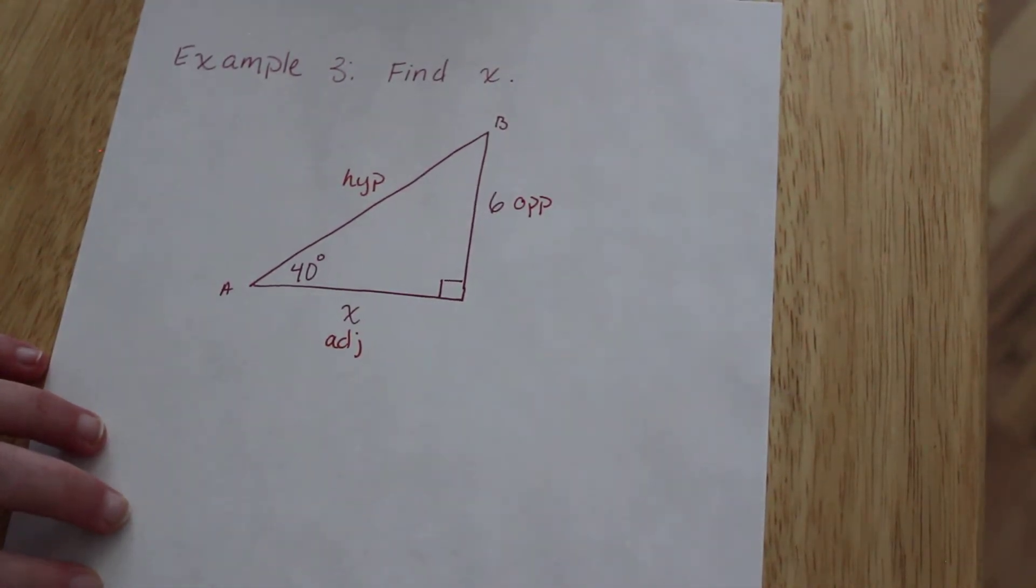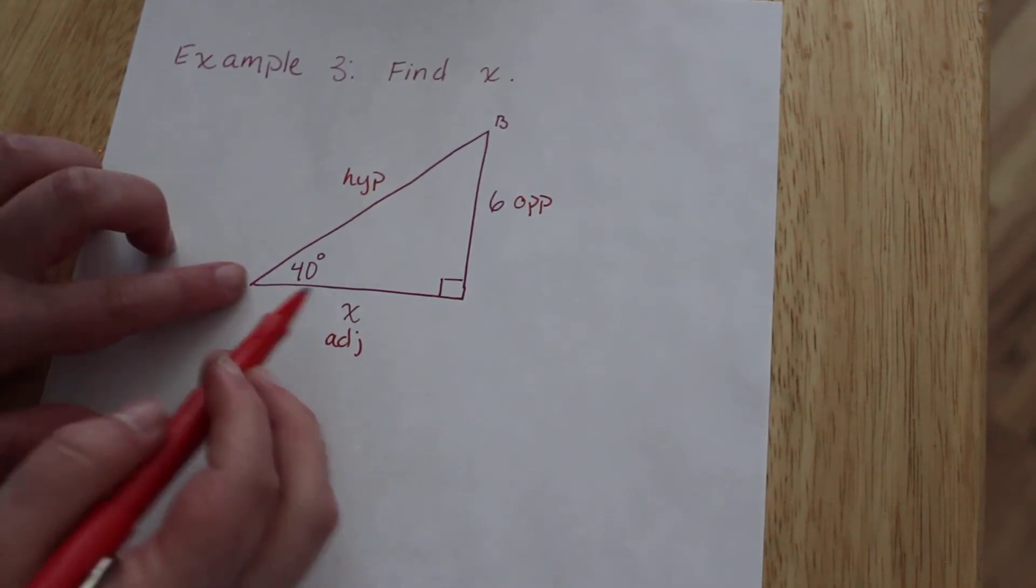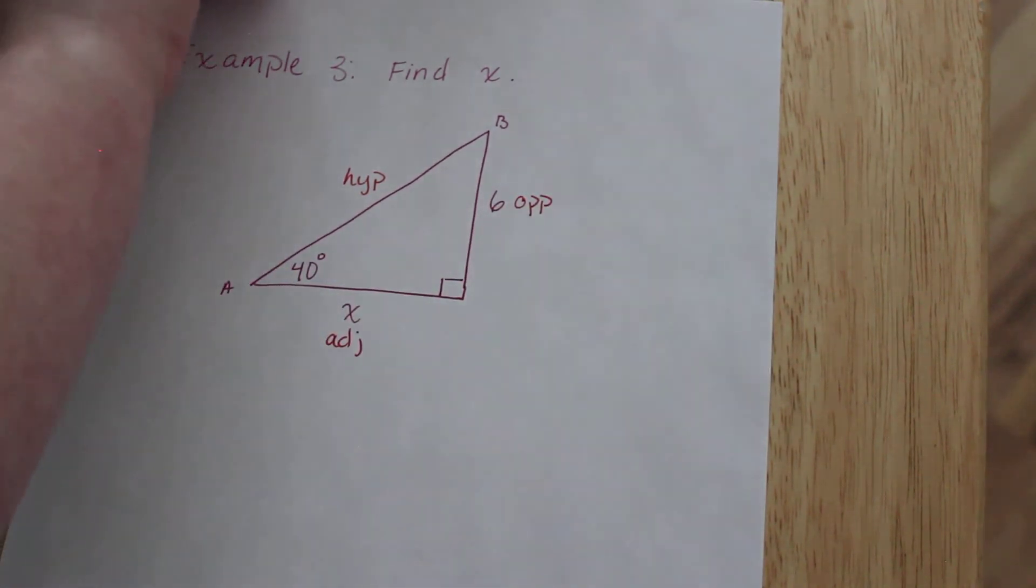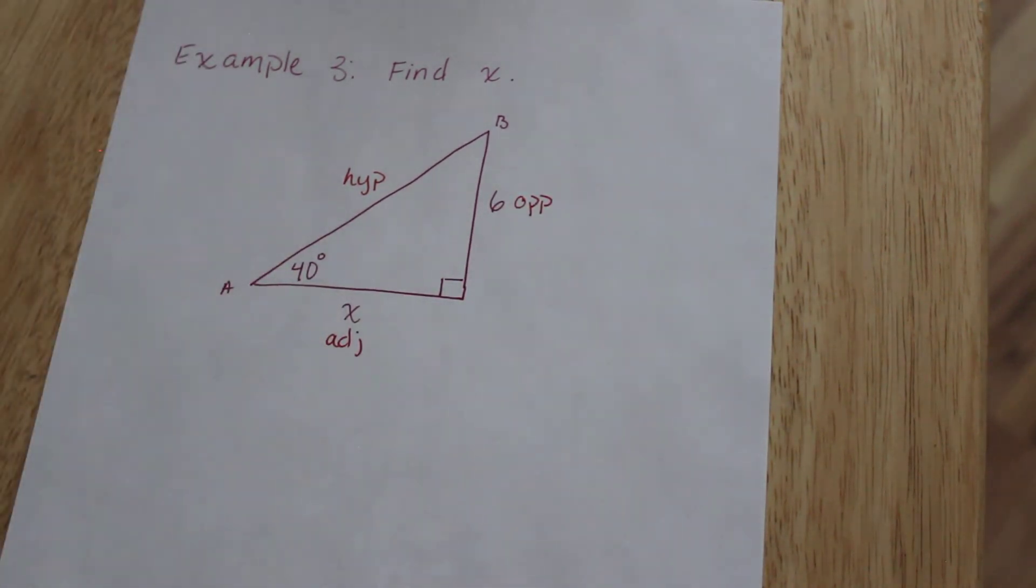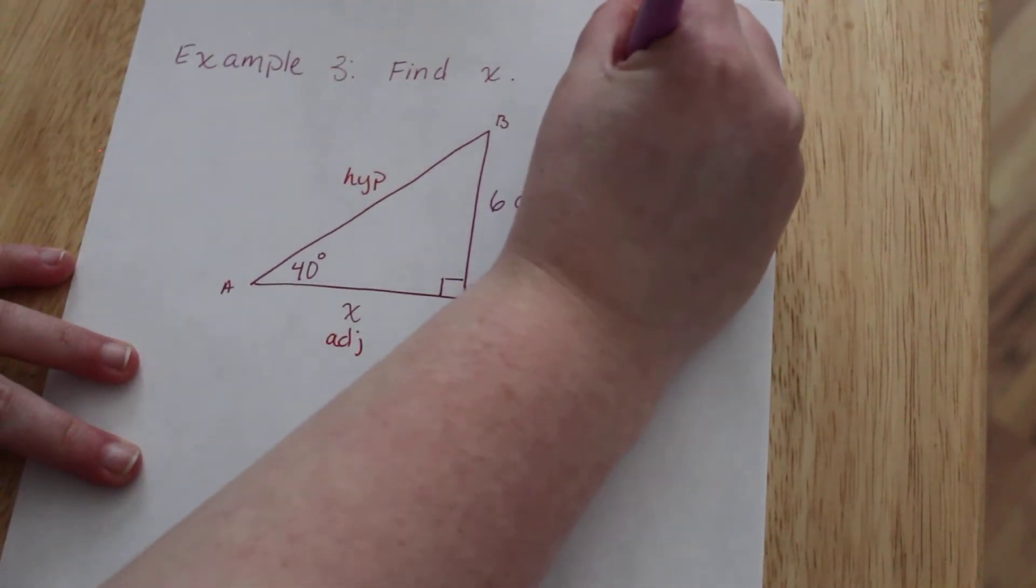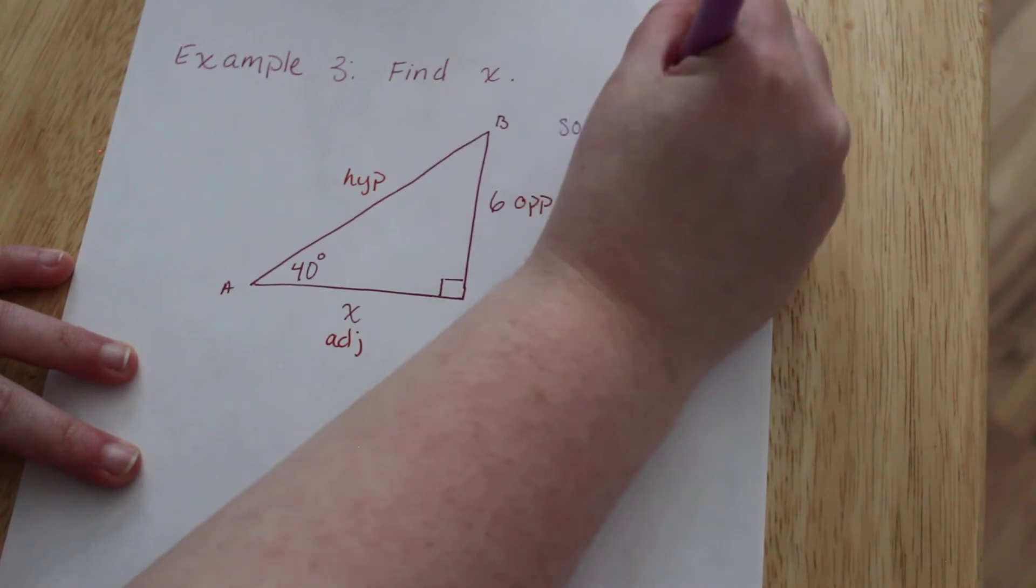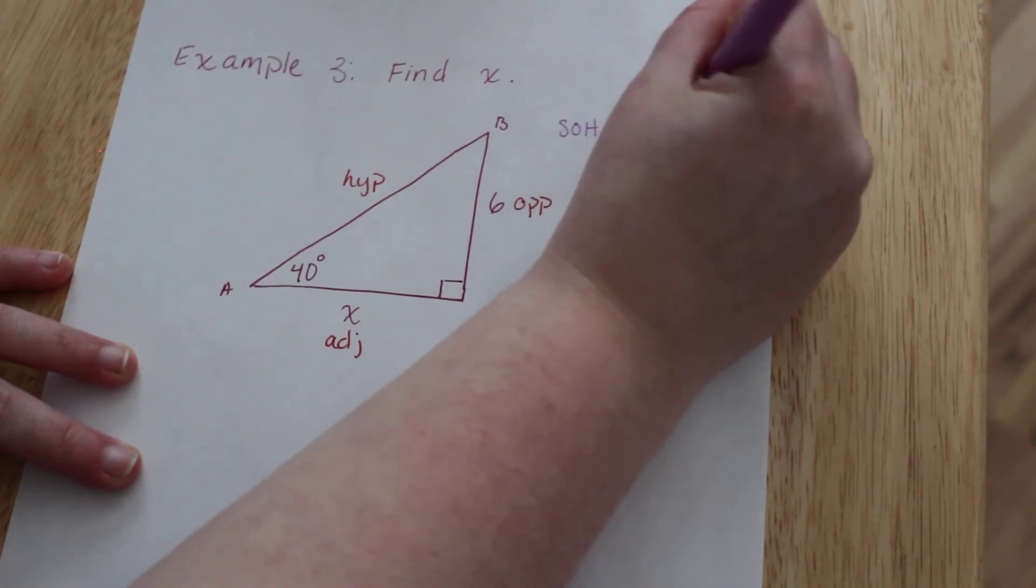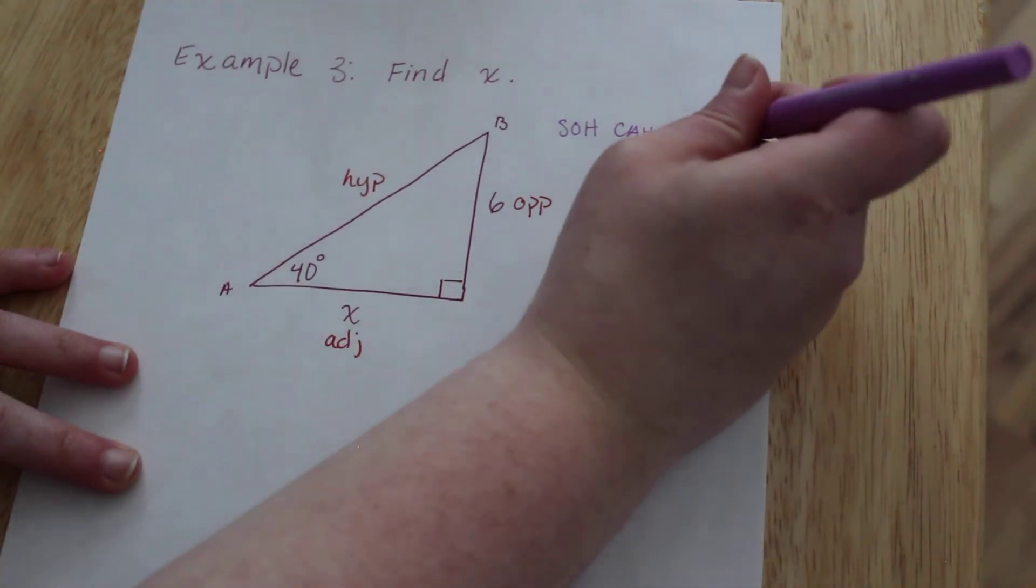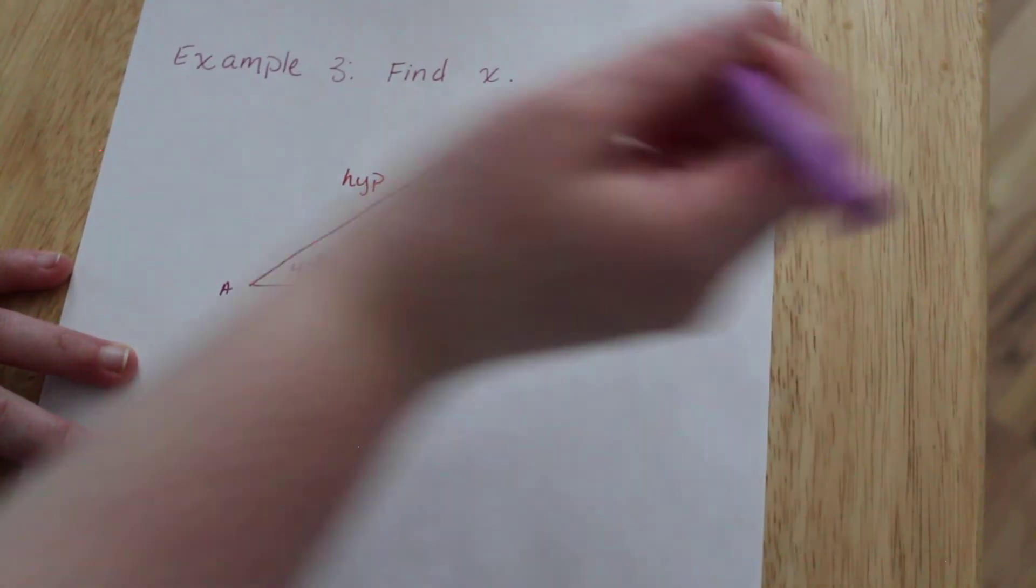Taking a look at our information, we have an angle, we have this side and this side. The trig function that we use when we have opposite and adjacent, let's remind ourselves of the acronym really quickly. The only trig function that uses both opposite and adjacent is our tangent function.